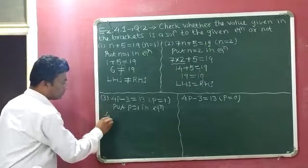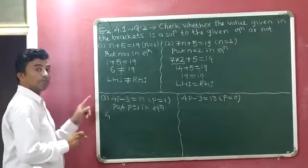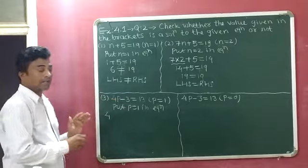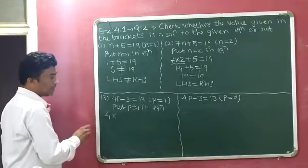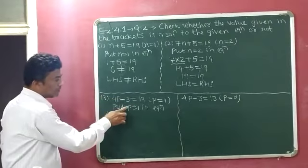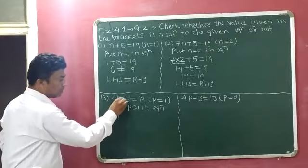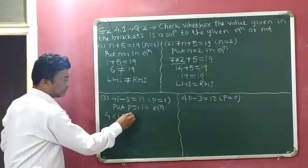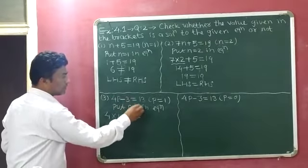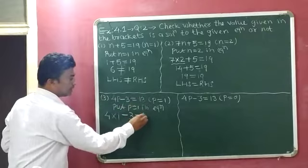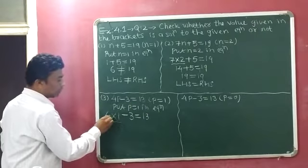Between 4 and P, no sign is given, so we write a multiplication sign. Since P equals 1, we write 4 multiplied by 1 minus 3 equals 13.